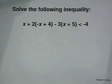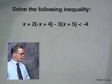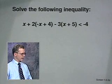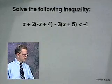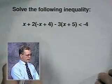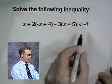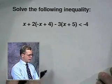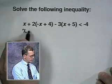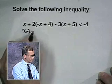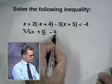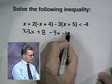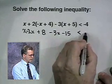Here's our inequality: x plus 2 times the quantity (negative x plus 4) minus 3 times the quantity (x plus 5) is less than negative 4. As if it were an equation, we'd remove the parentheses using the distributive property: x minus 2x plus 8 minus 3x minus 15 is less than negative 4.